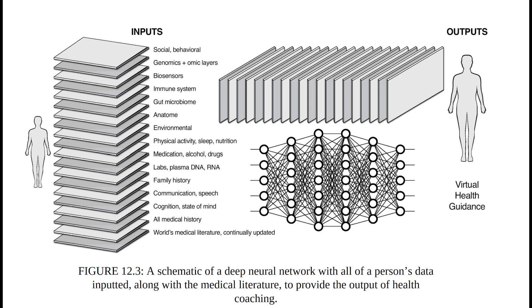And so as you can see in this schematic of a deep neural network taken from Eric's book, there are multiple different input layers that can be taken from an individual. And by integrating this information into a deep neural network, it can provide an output of virtual health guidance. And so deep neural networks are particularly suited for these kind of data sets, where there are multiple hidden layers between the input and output layers, with the models being able to extract complex dependencies in the data and select features that are most relevant to predictions.